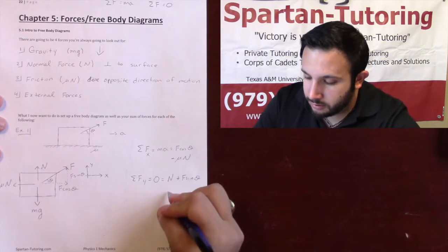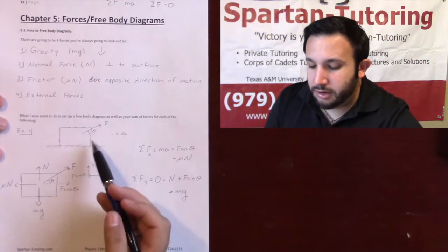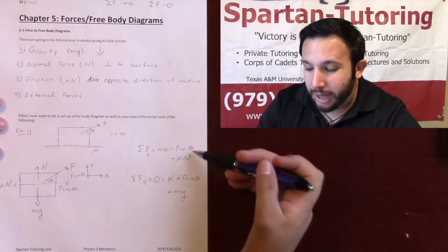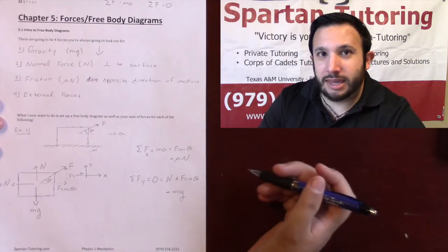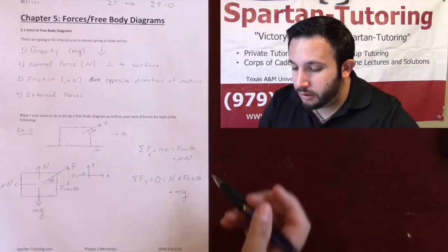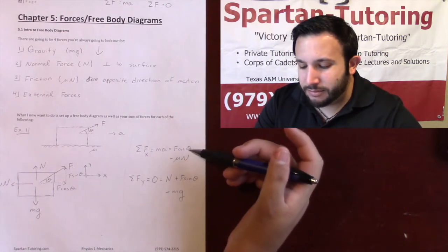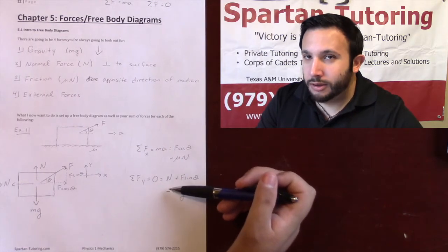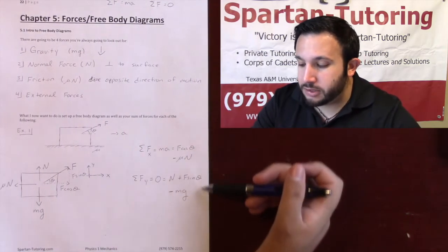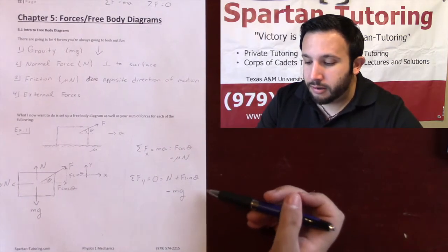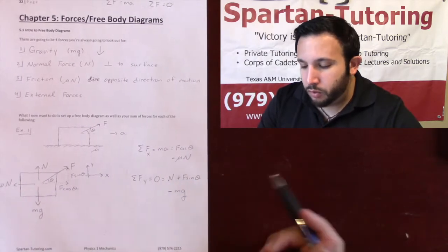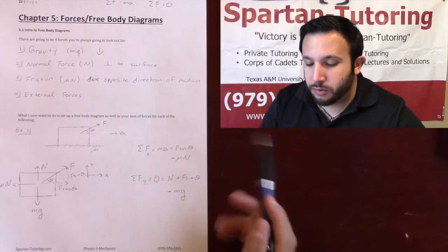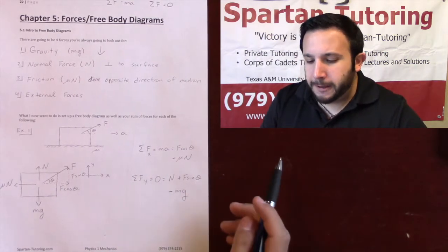Mg is going in the negative y-direction, so negative mg. That's how you set up the free body diagram and corresponding sum of forces. After this point you have two equations. They may ask you to find acceleration or normal force — those would be the two unknowns. The hardest math will be a system of equations. In parts two and three we'll do the algebra; right now I just want the free body diagrams and sum of forces to be perfect.